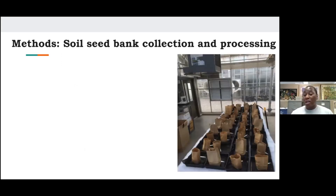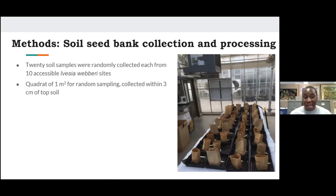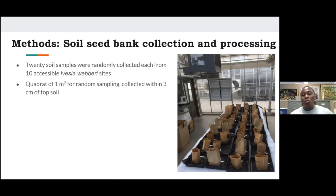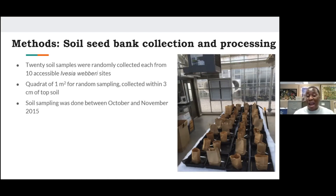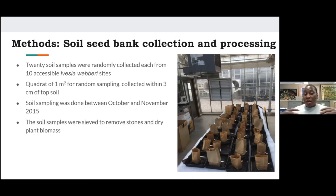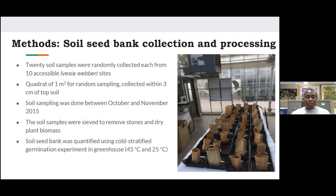To address these questions, we collected soil seed bank samples from 10 accessible sites. Samples were collected within one-meter quadrats, from the top three centimeters of topsoil, which contains the highest density of seeds. Sites were selected randomly but within patches where Ivesia weberi occurs. Sampling was done between October and November — after seeds had been shed into the soil but before snow could bury them. Post-collection, we sieved the soil samples to remove stones and estimated the number of seeds or seedlings using the seedling emergence method.